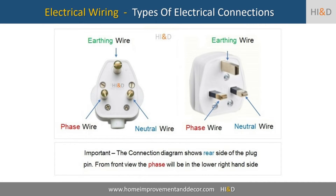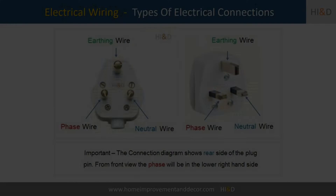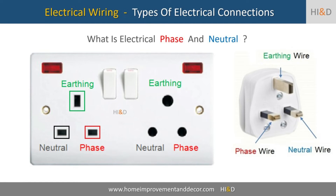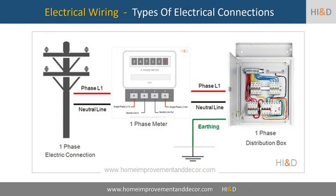You will notice three types of electric wires are present in the switchboard. These three wires include the phase line, neutral line, and the earthing line. The electricity supply connection provided by the electricity distribution company has two types of wires. The first type of wire is called a phase wire and the second type of wire is called the neutral wire.